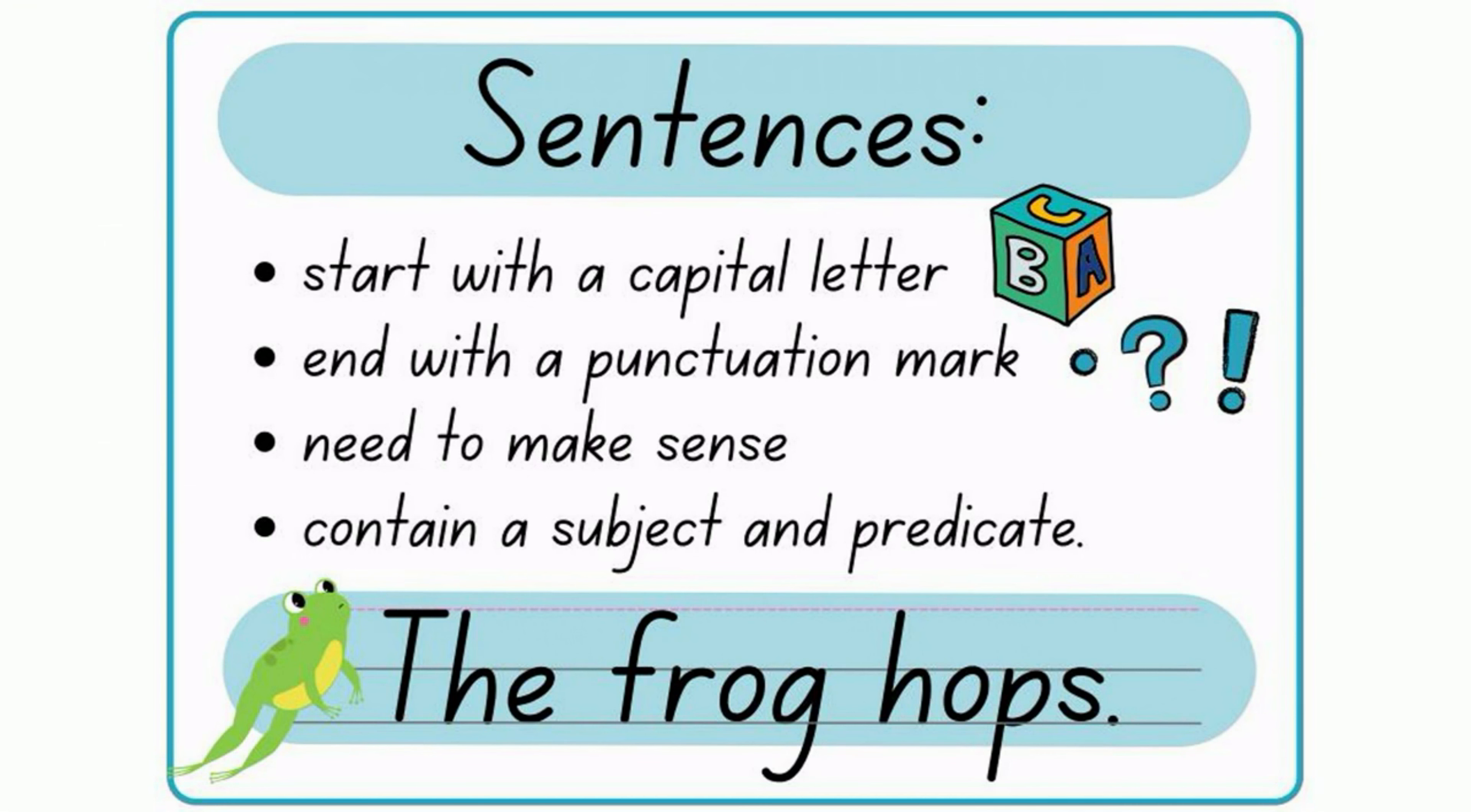In order for a sentence to be correct, it must begin with a capital letter, end with a punctuation mark, it needs to make sense, and it must contain a subject - that is the who or what the sentence is about - as well as the predicate, which we will learn about later.